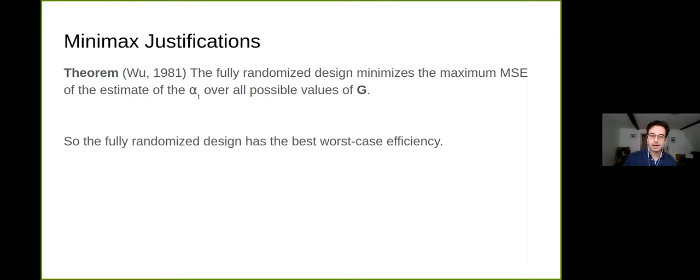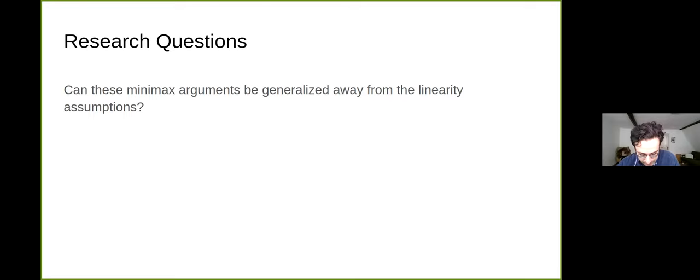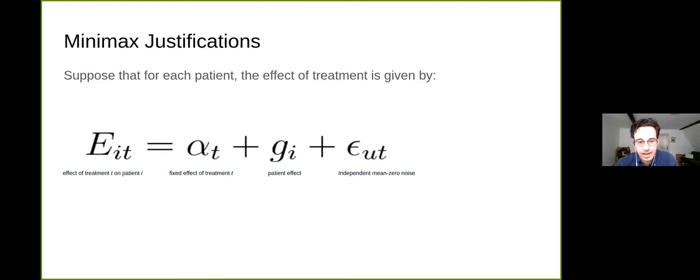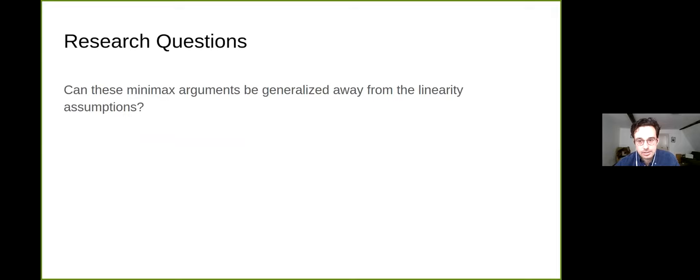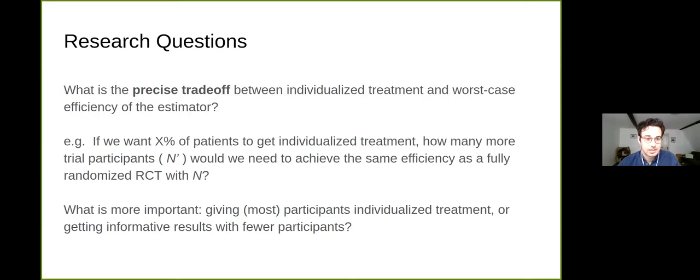But these arguments are pretty parametric and they're all assuming linearity. Note that we had to move away from the binary outcomes because we have this mean zero noise term here. My first question is can these minimax arguments be generalized away from the linearity assumptions? What if we just have binary outcomes? That's just a technical question: how far can we go with this minimax thing?